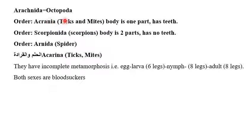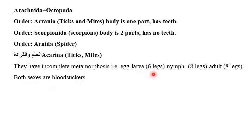Class Arachnida — Order Acarina: mites and ticks. Body is one part, has no teeth. Order Scorpionida: scorpions; body is two parts, no teeth. Order Araneida: spiders. Acarines — ticks and mites — have incomplete metamorphosis: egg (6-legged larva), nymph (8 legs), adult (8 legs). Both are blood suckers. They are not insects; they include ticks, mites, scorpions, and spiders.